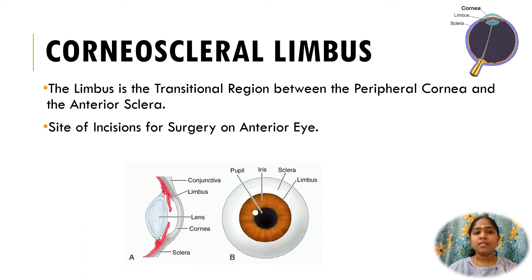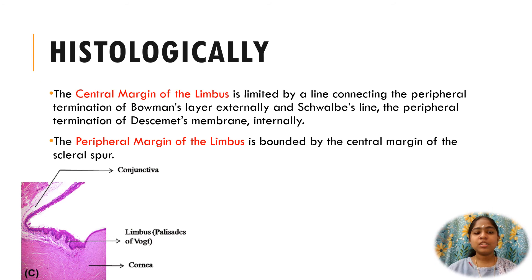There are histological, pathological, and surgical definitions for the limbus. Histologically, the central margin of the limbus is limited by a line connecting the peripheral termination of Bowman's layer externally and the Schwalbe line — the peripheral termination of Descemet's membrane — internally.